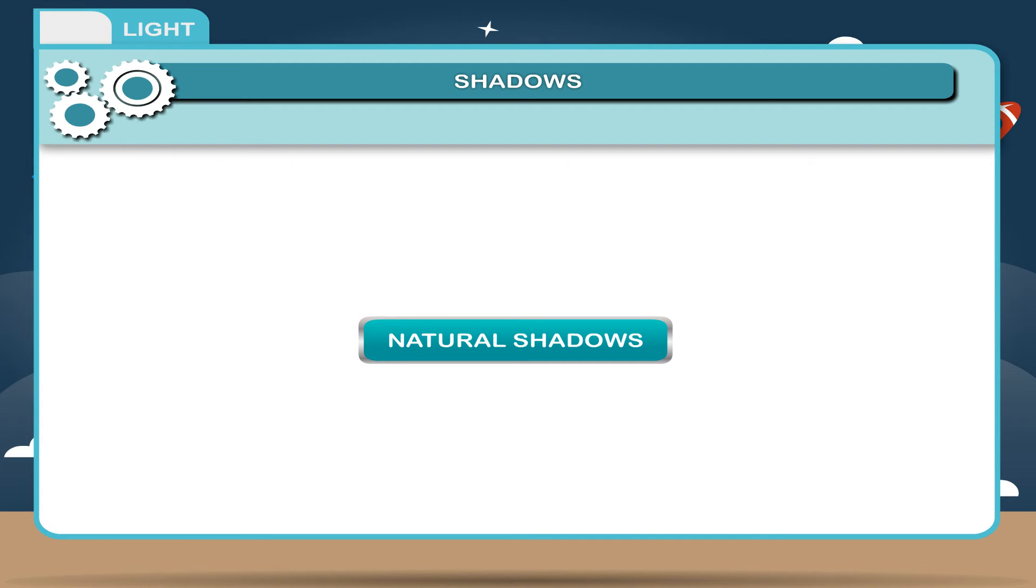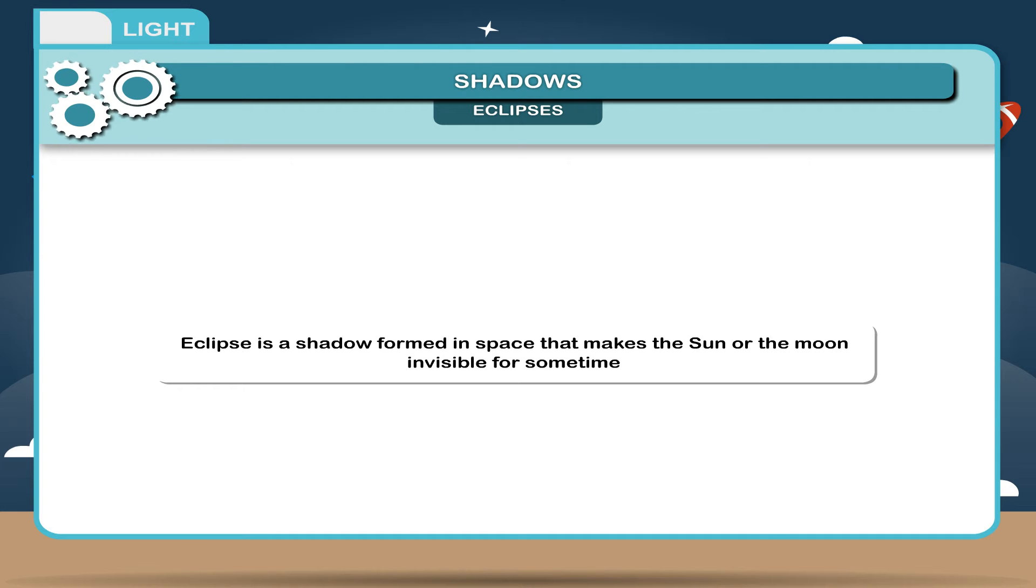Natural shadows. Eclipses. Eclipses is a shadow formed in space that makes the sun or the moon invisible for some time.